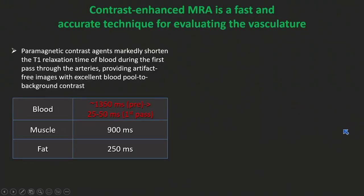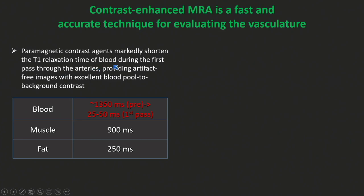Contrast-enhanced MR angiography is fast and accurate in most applications, and we can use it for evaluating the vasculature. Even though CT angiography does a great job for most things and is very efficient, there are a lot of things where the combination of MR angiography and other techniques — such as flow imaging and wall imaging — gives you a lot more information than you can get from CT alone. The basic principle is that paramagnetic contrast agents, such as gadolinium-based agents, shorten the T1 relaxation time of blood, especially during the first pass of the contrast agent. Not much different from CT, where we use iodinated contrast agents and mostly image during the first pass.